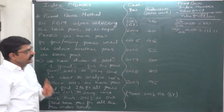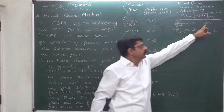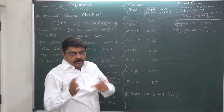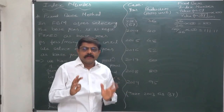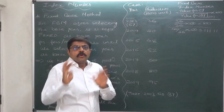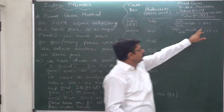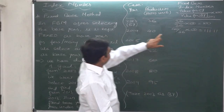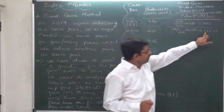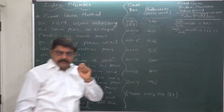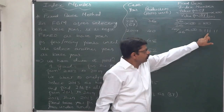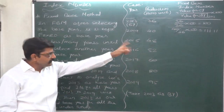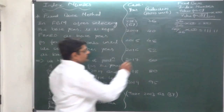The index number is free from all units of measurement. Taking production in 2013 as 100, in the year 2014 it was 111.11. This means in the year 2014 there was a growth of 11.11 percent in production as compared to 2013. This is the interpretation of the index number of 111.11.